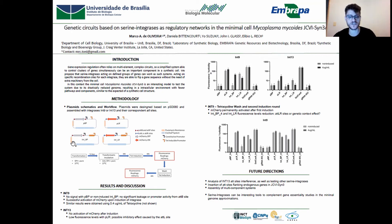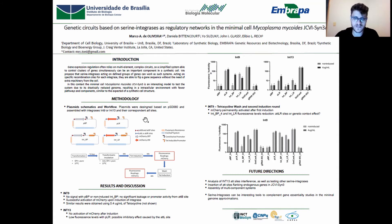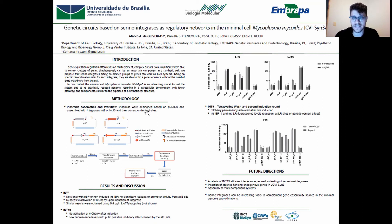We've selected two integrases for this first analysis, integrase 9 and integrase 13, as well as used two plasmids — one with constitutive emittery expression and another one lacking the emittery gene — to use as positive and negative controls in our assay.